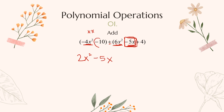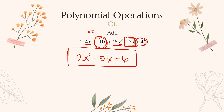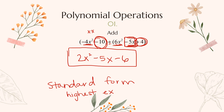Lastly, I combine the constant numbers: negative 10 plus positive 4 gives me negative 6. So combining like terms gives us 2x squared, minus 5x, minus 6. Standard form means we write our highest exponent first down to our lowest — the number without a variable always goes at the end. So standard form is highest exponent to lowest exponent.